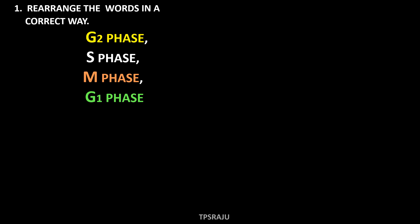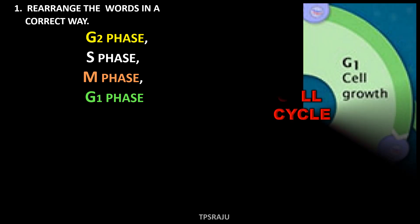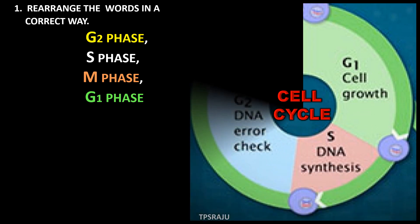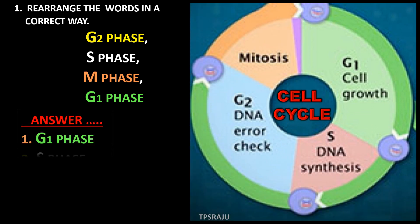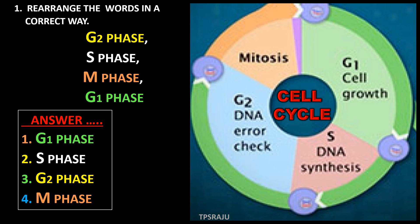Once again, rearrange the words in the correct way. The words are G2 phase, S phase, M phase and G1 phase. These words belong to the cell cycle. Observe here. So, the answer is G1 phase, S phase, G2 phase and M phase.